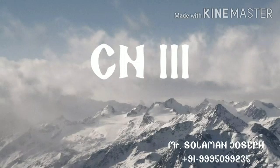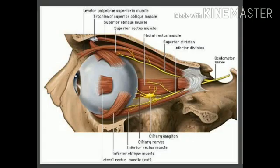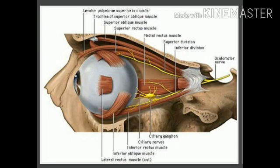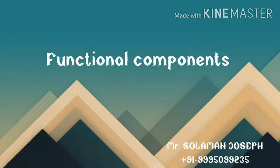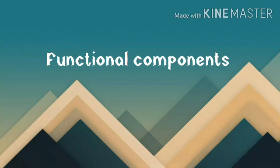Today we are going to discuss the third cranial nerve, the oculomotor nerve. It is the largest of the ocular motor nerves, containing 15,000 axons that include motor fibers and parasympathetic motor fibers. The nerve is motor in function anteriorly, supplying the levator palpebrae superioris muscle and all extraocular muscles except the lateral rectus and superior oblique muscle.